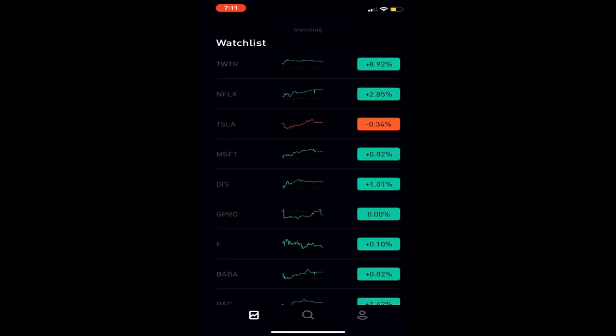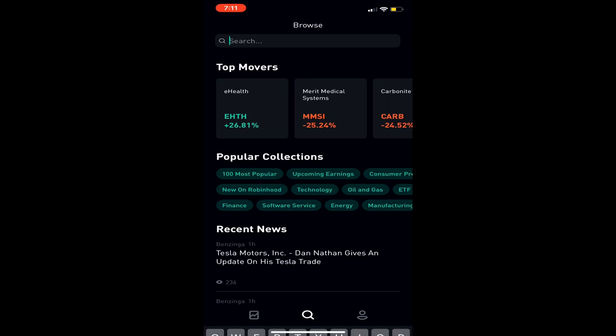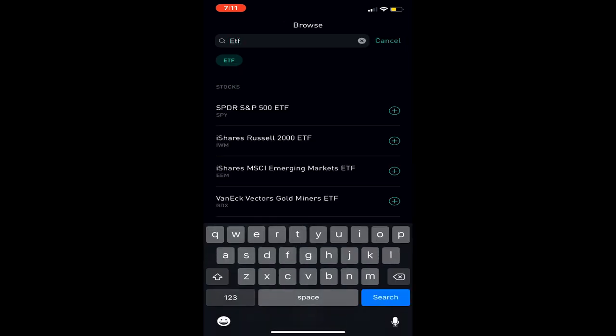Once you log into your Robinhood account, buying an ETF is the exact same process you would use in order to buy a stock on Robinhood. The first thing you're going to want to do is go to the search window. So in order to do this, hit the search button in the bottom middle of the screen, and then type in ETF to the search bar.